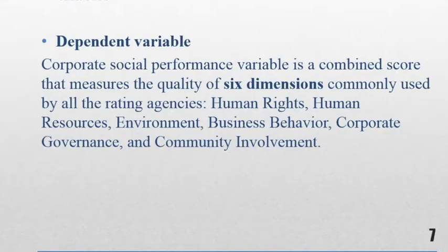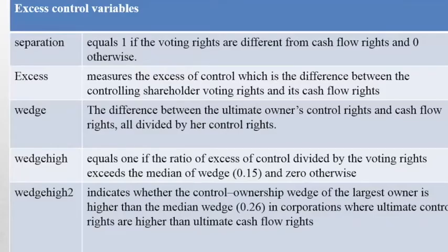So the excess control variables, here we have five variables. The first one is a dummy variable that takes the value of one if the voting rights are different from cash flow rights and zero otherwise. Excess is the difference between voting rights and cash flow rights. Wedge is a ratio, the excess divided by the control rights. In that sense, we have two values, wedgehigh and wedgehigh2.